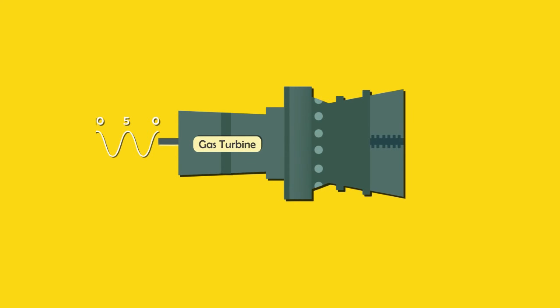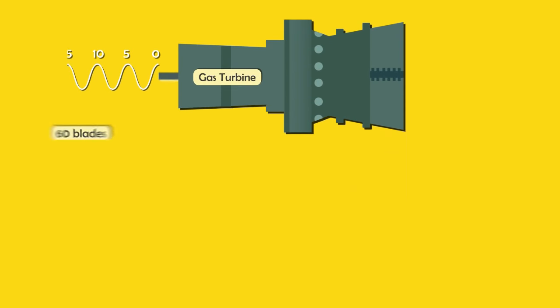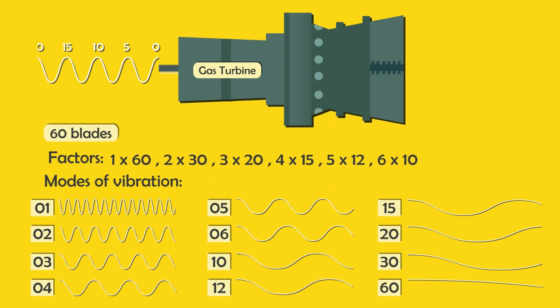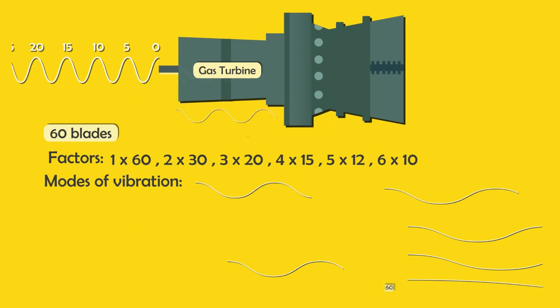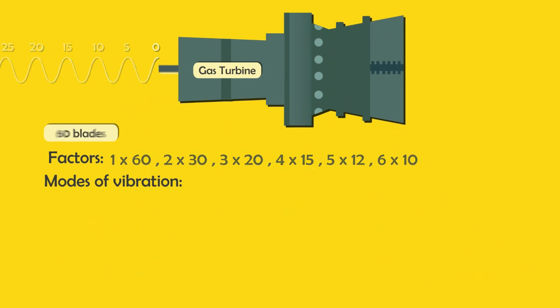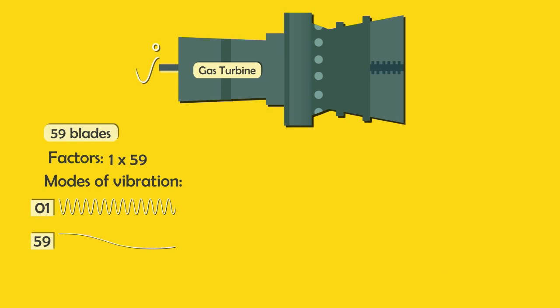Similarly, in gas turbines the shaft vibrates up to 5 times the speed of rotation. If we use 60 blades, the vibration of the blades will enhance the overall vibrations. So it is better to use prime numbers of blades like maybe 59.